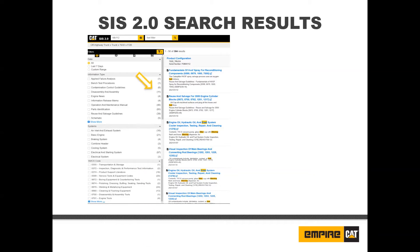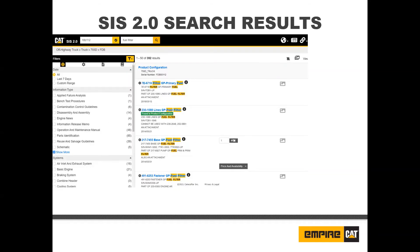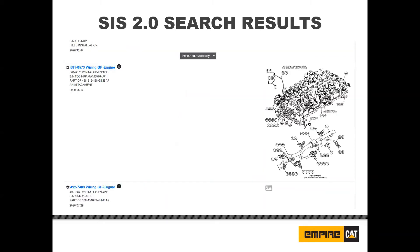Each filter option displays the number of results for that option in parentheses to the right. Parts results include separate illustrations of the graphics. You can toggle individual separate illustrations on by clicking the thumbnail icon, or toggle the thumbnail icon in the toolbar to preview all separate illustrations. Clicking the separate illustration will toggle it off. You can toggle the separate illustration on or off for all parts results by clicking the thumbnail icon.